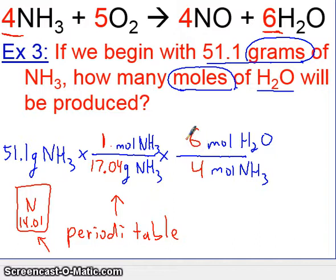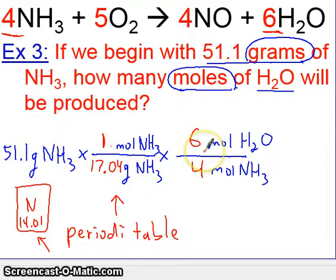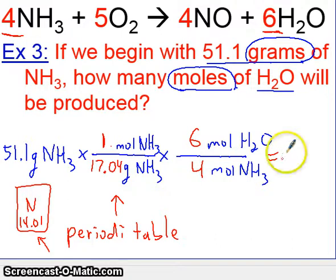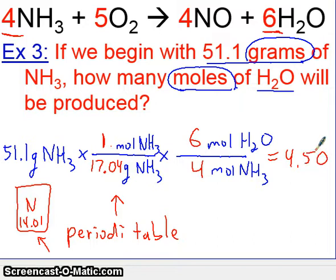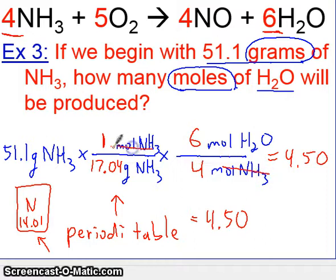Let's go ahead and calculate this out. Do 51.1 multiplied by one, which gives you the same thing, divided by 17.04, multiplied by six, and divided by four. This should give you a final answer of 4.498, or 4.50 to use significant figures. So our final answer is 4.50 moles of H2O. That's what we ended up with, because all the units cancel down.